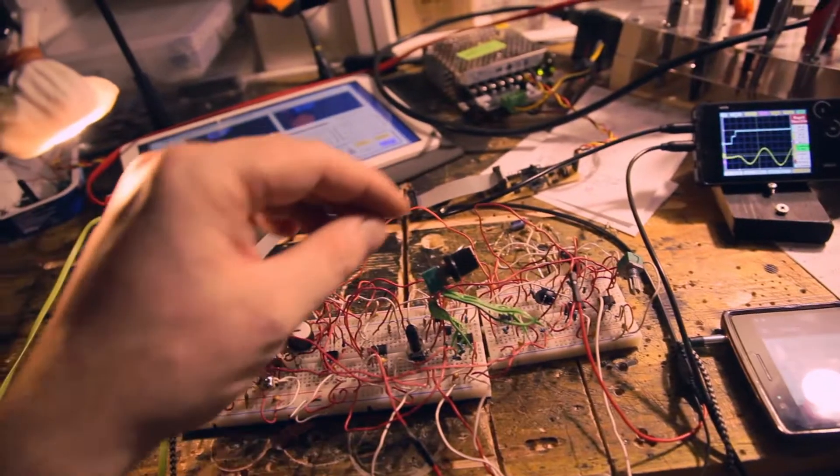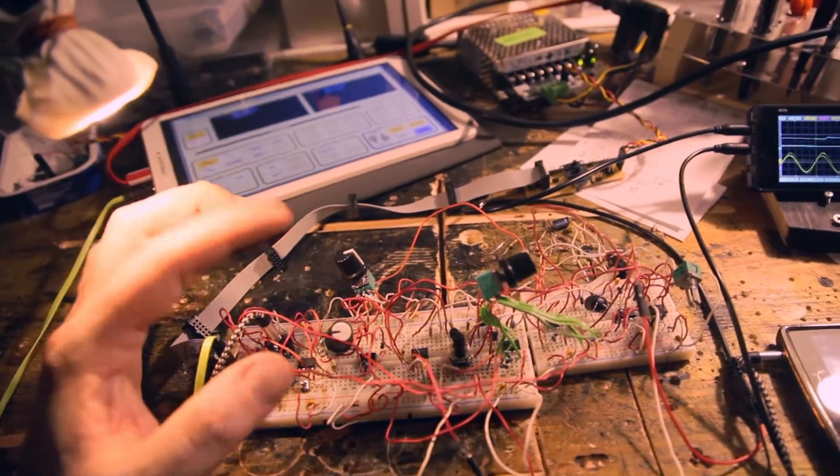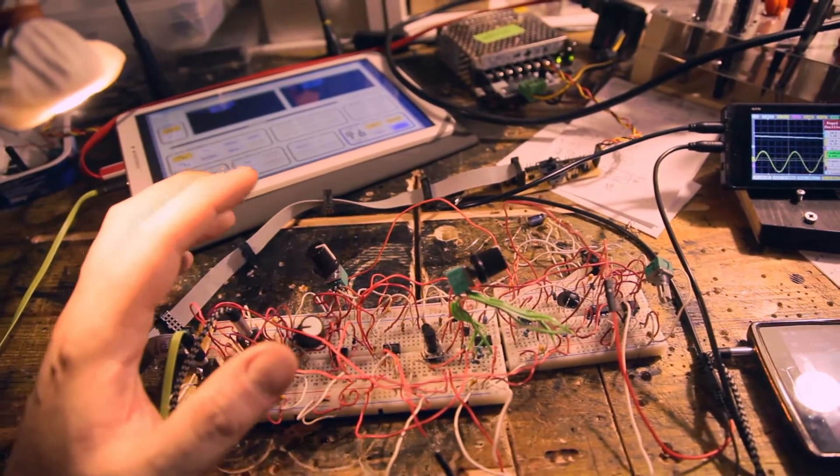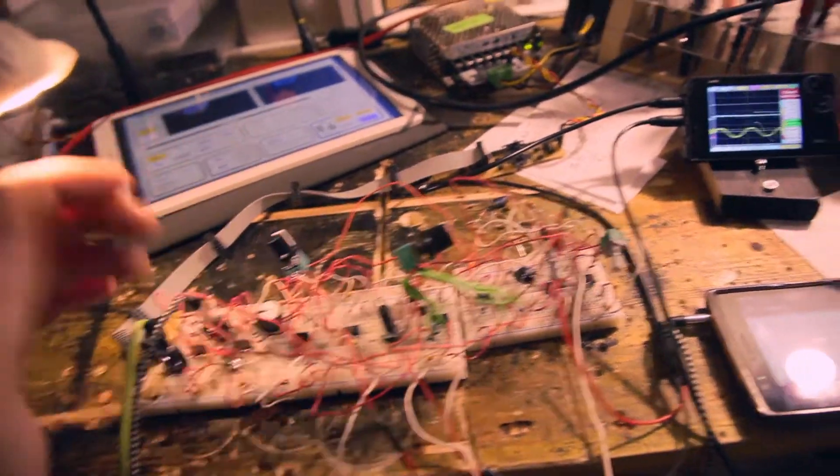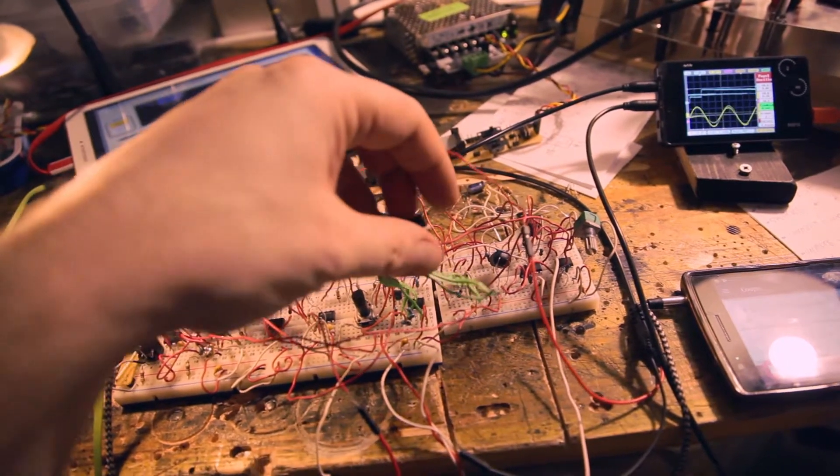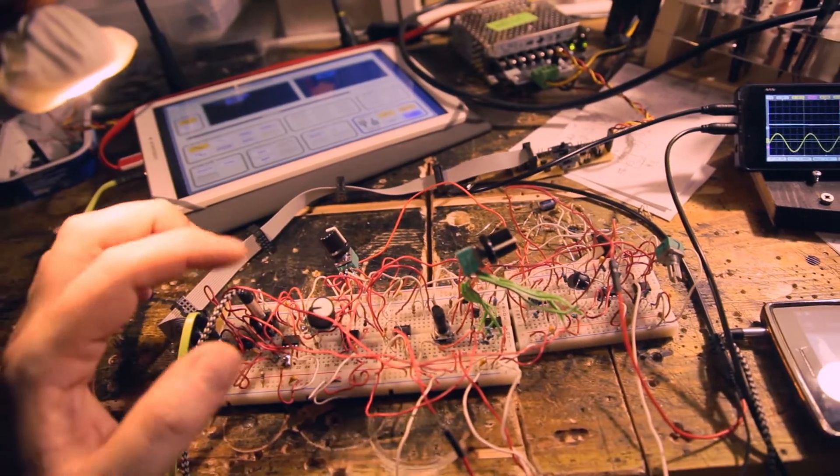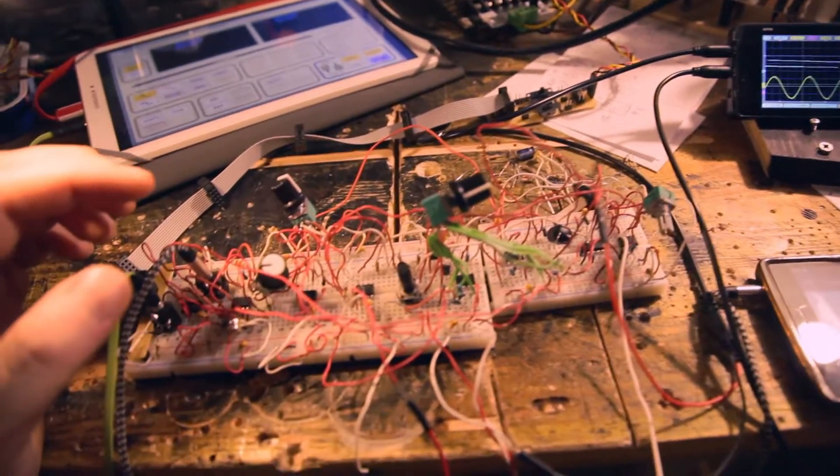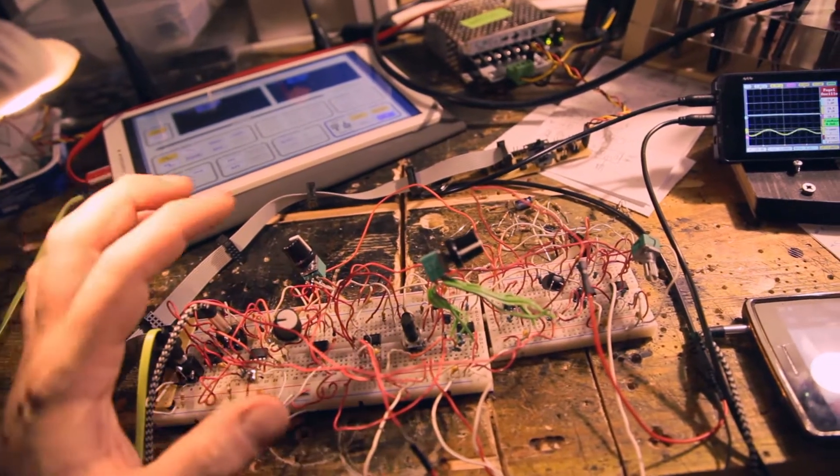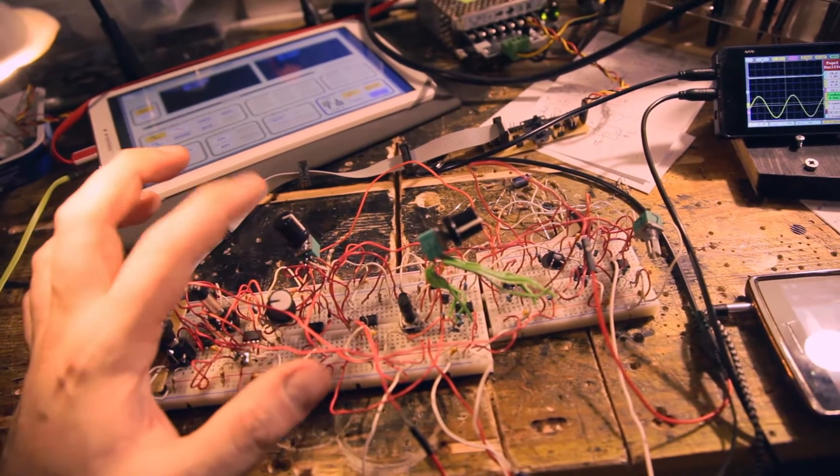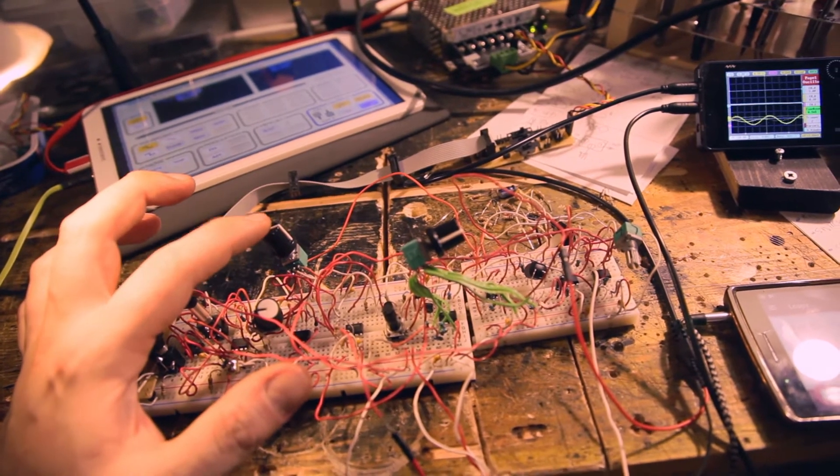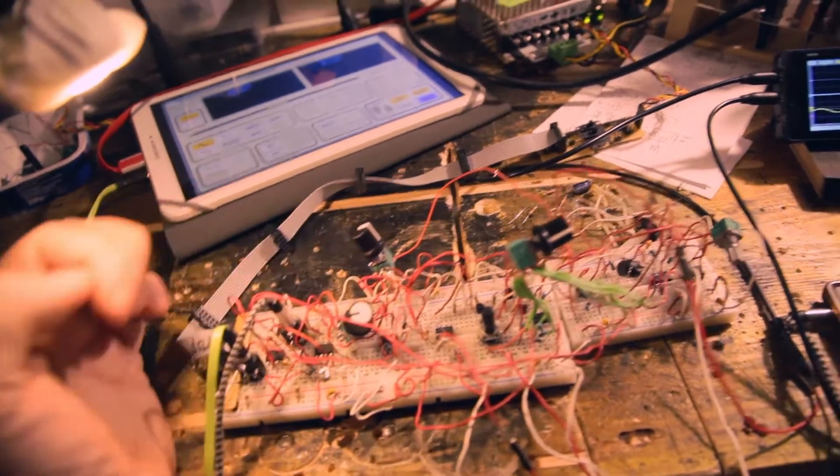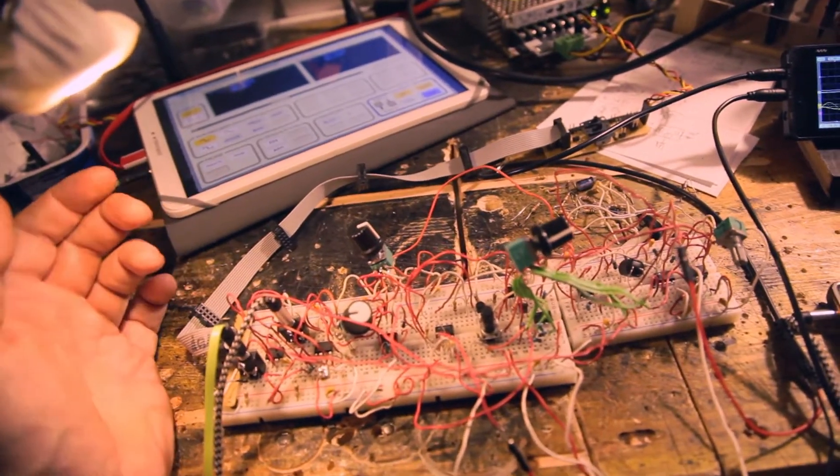The nice thing about my Flexi VCA is that you can use both regular control voltages, so you don't have to use a drum loop or a sound. You can also use normal control voltages, but if you want, you can plug in a sound, even a very low volume sound, because it has an adjustable gain of up to a hundred times gain. So that's a lot.